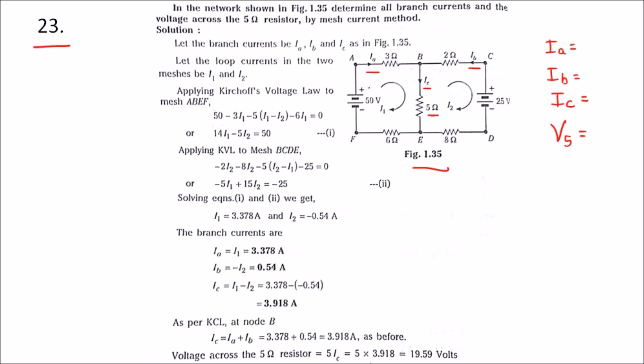First, let us apply Kirchhoff's Voltage Law to both meshes. Let the loop currents be I1 and I2. So this is the loop, and this is another loop.